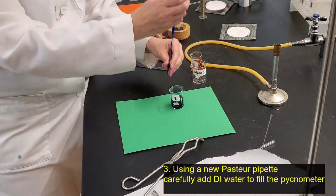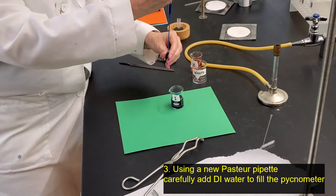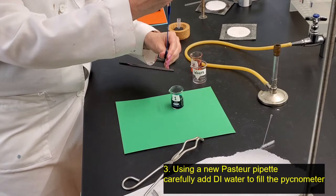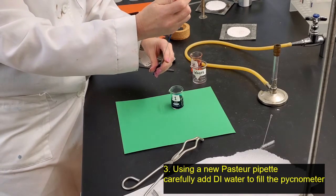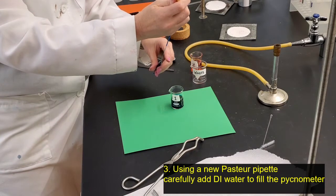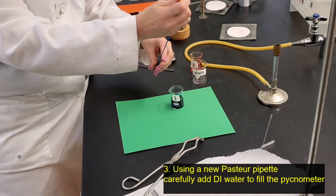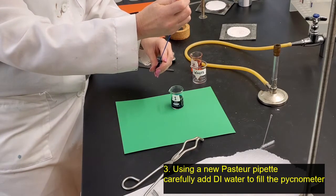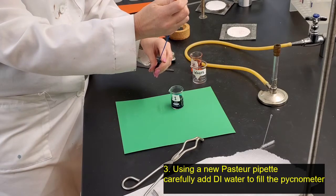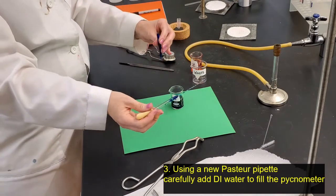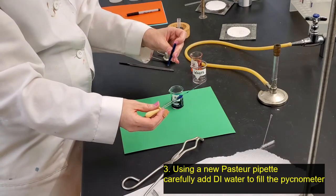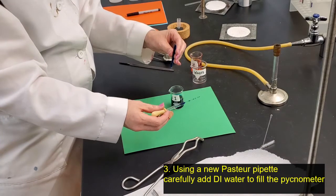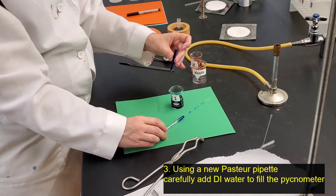It's important that we get no air bubbles inside of this pycnometer. When the pycnometer is full, you'll be ready to take a mass. Check that you have filled all the way to the very top of the pycnometer, that there's no air at the top.